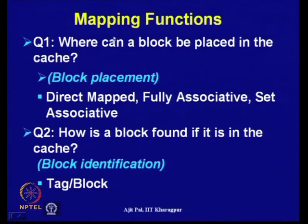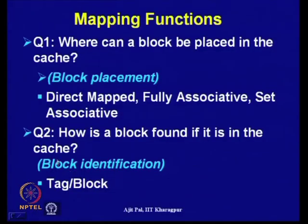The second question that the mapping function can answer is how is a block found if it is in the cache — that means whenever a particular block is present in the cache, how can it be found from the cache memory. These two questions can be answered, and particularly the second question is answered with the help of the tag field and different words present in the block.